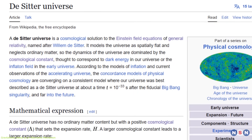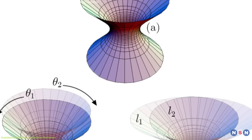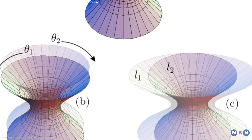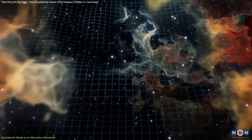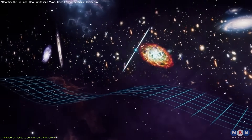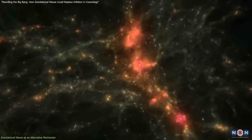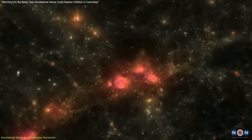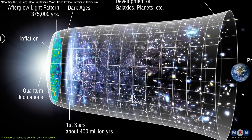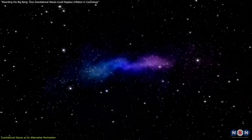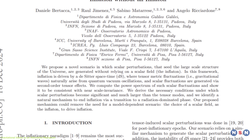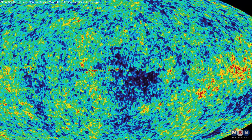A critical component of this theory is De Sitter space, a mathematical model describing an expanding universe dominated by a cosmological constant. In such a space, gravitational waves naturally arise from quantum vacuum fluctuations, and over time these waves create patterns in spacetime that influence the distribution of matter. One of the most compelling aspects of this model is its ability to explain the universe's structure without the fine-tuning inherent in inflationary models, sidestepping the need for hypothetical entities like the inflaton field. Additionally, this theory aligns with observations of the cosmic microwave background, as the density variations it predicts could match the temperature fluctuations we observe.